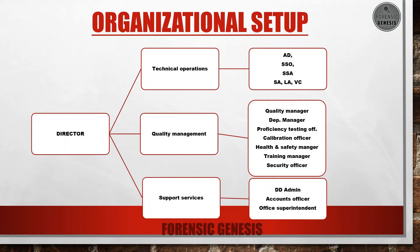Organizational setup of a lab: Under the director, there are three teams — technical operations, quality management, and support services. The main focus is on technical operations: Assistant Director, SSO (Senior Scientific Officer), SSA (Senior Scientific Assistant), SA (Scientific Assistant), LA (Lab Attendant), and BC (Vista Cutter). We will be diving more into this field with important topics like the history and principles of forensic science.